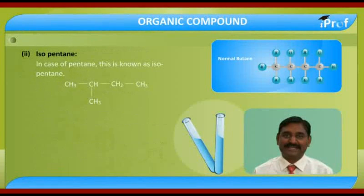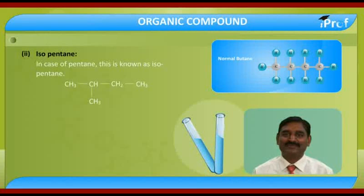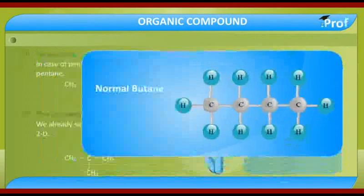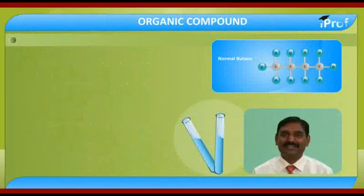In the case of pentane, this is known as isopentane: CH3, CH, then CH3, CH2, CH3. When one carbon is attached with four CH3 groups, this is known as neopentane. One carbon attached with four CH3s — this is known as neopentane.